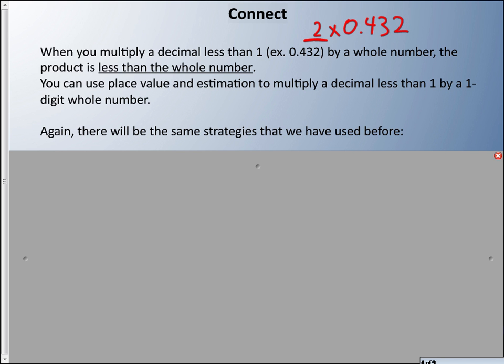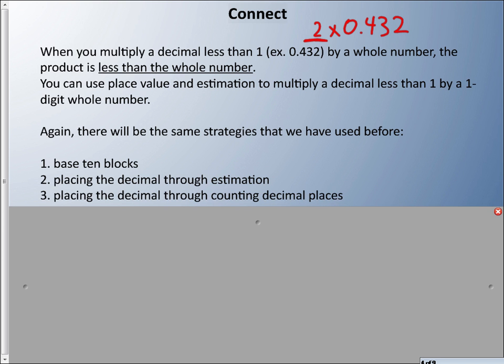You can use place value and estimation to multiply a decimal less than 1 by a 1-digit number. We're going to use the same strategies that we've used before. We talked about using base 10 blocks last time. We talked about placing the decimal through estimation and placing the decimal through counting decimal places. I recommend the last two, not necessarily the base 10 blocks. In fact, I will have one recommendation for this one to start.